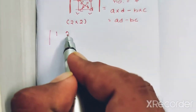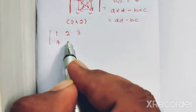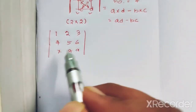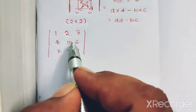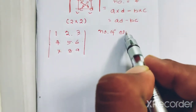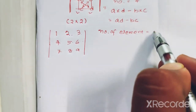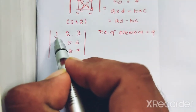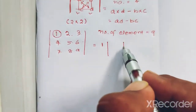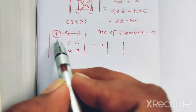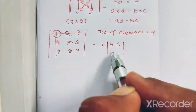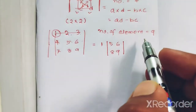For a 3x3 matrix we select elements 1, 2, 3, 4, 5, 6, 7, 8, 9 — so the number of elements is equal to 9. We write the first row's first element, then the determinant symbol, then the second row and corresponding columns: 5, 6, 8, 9.